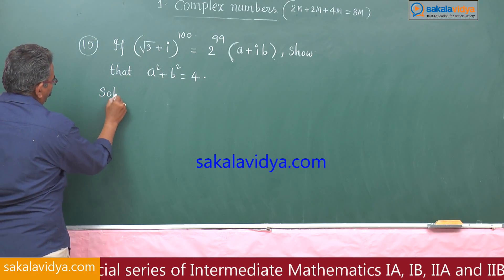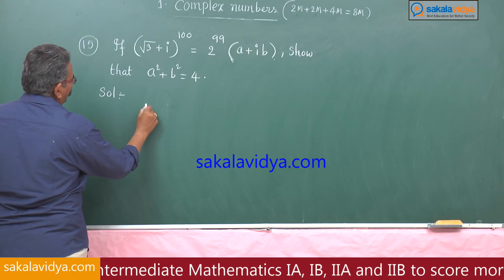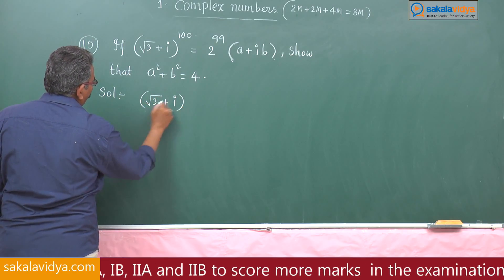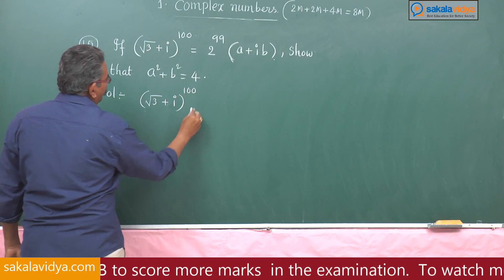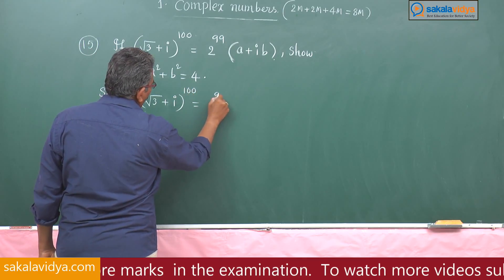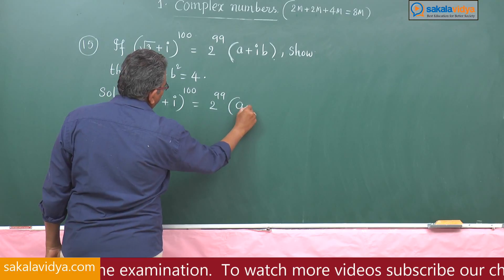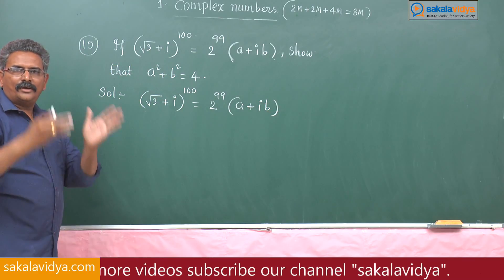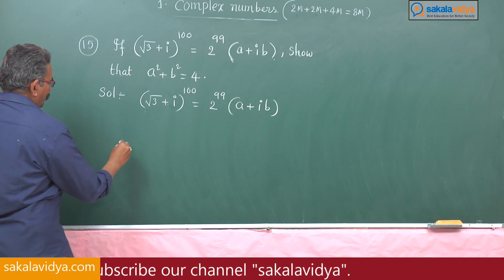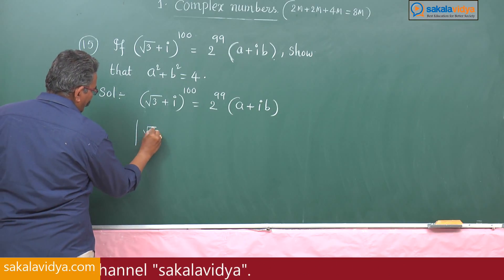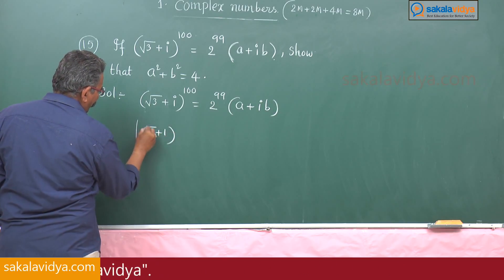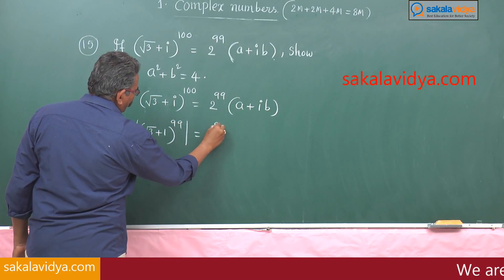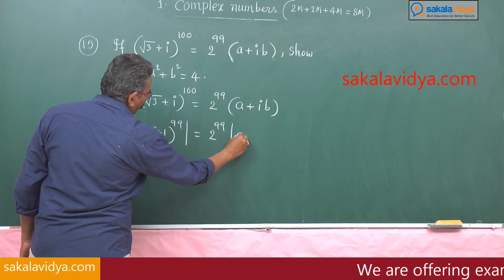This is similar to the previous problem. We have (√3 + i)^100 = 2^99 · (a + ib). Take modulus on both sides: |√3 + i|^100 = 2^99 · |a + ib|.